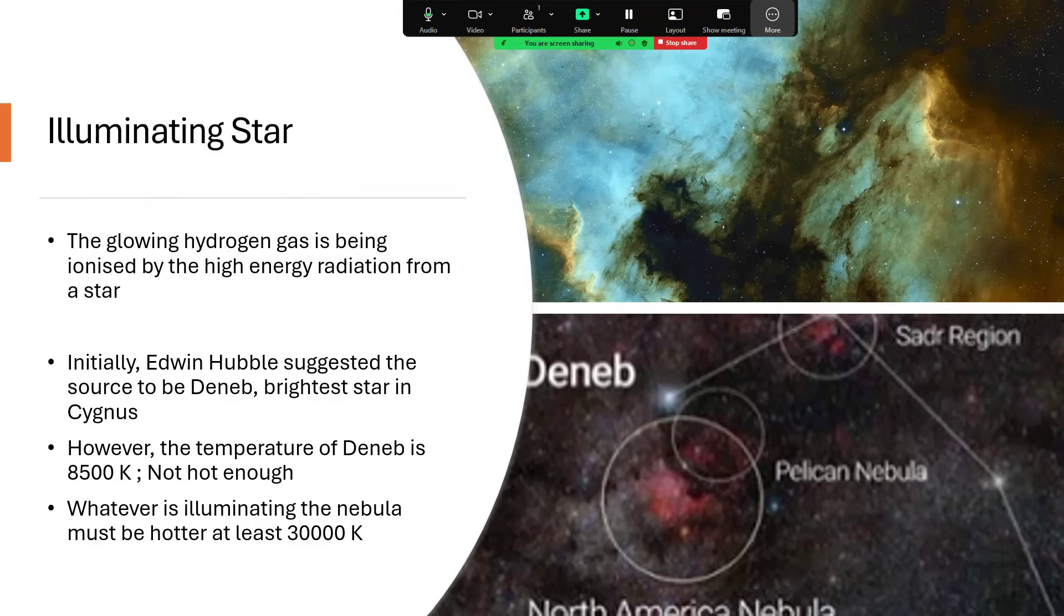Before we knew the distances we could tell it wasn't right because Deneb is hot at 8500 Kelvin, much hotter than the sun but not hot enough. The radiation that's causing all this gas to glow must be coming from a star with a temperature of at least 30,000 Kelvin, so much hotter than Deneb, and that's really contributing to the output being largely in the ultraviolet part of the spectrum in order to create this vast region of ionized hydrogen.